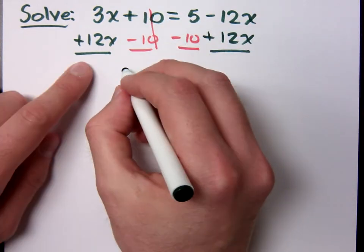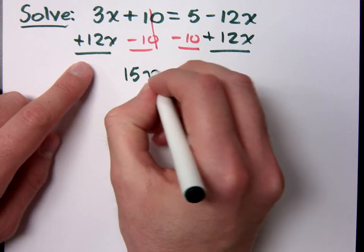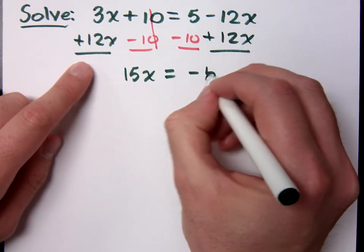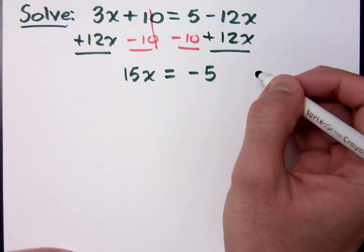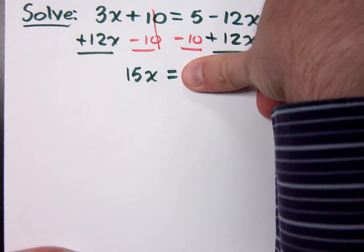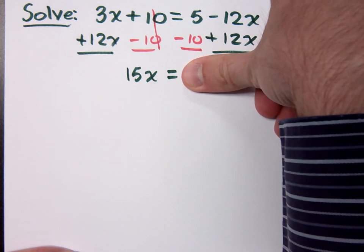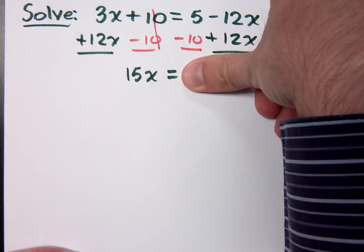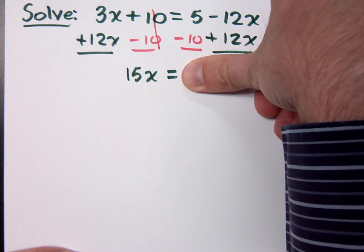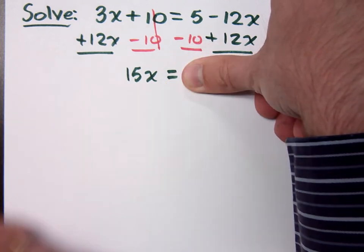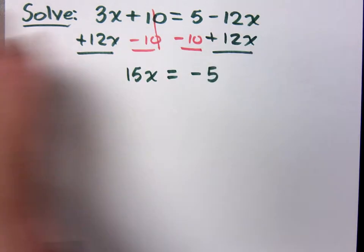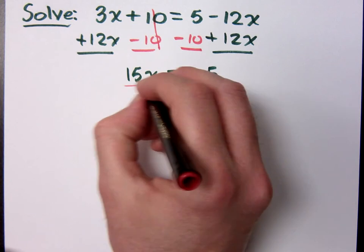So, now I have 15x on the left side of the equation equals what? Negative 5. It does not matter what's on the other side of this equation. How do you get x by itself? Divide by the coefficient, right? Does it matter what's over here underneath my thumb? No. This coefficient is what matters. So, I divide both sides by 15.